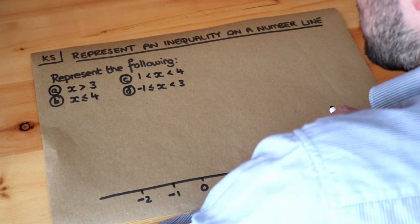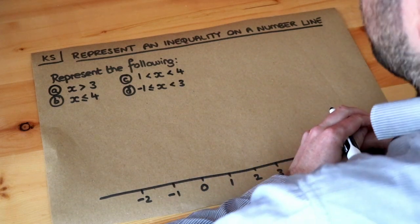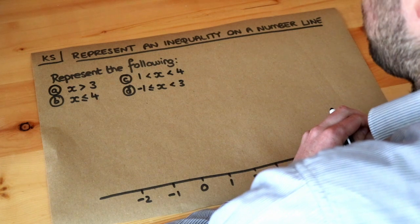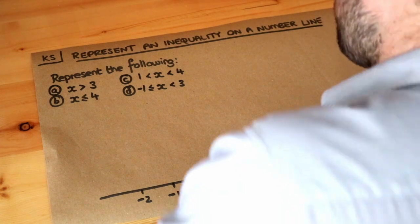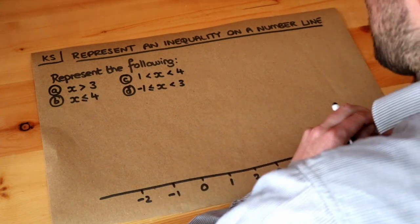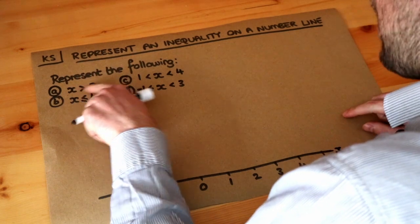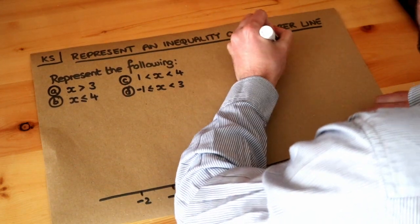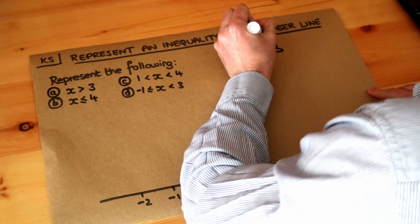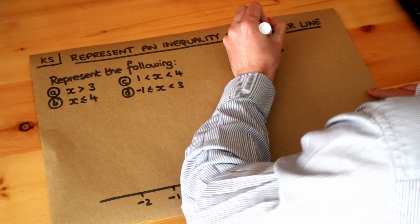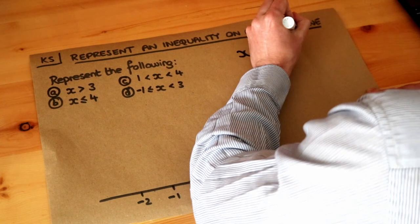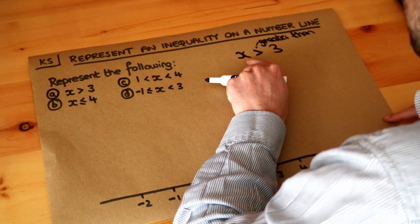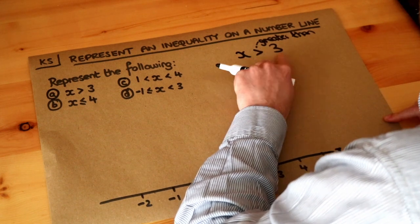Hello and welcome to this Dr. Ross-Massky skill video on representing an inequality on a number line. Now what do we mean by inequality? Let's just recap that. When we write x is greater than 3, that symbol means greater than. So this is basically saying that x can be any value which is greater than 3.